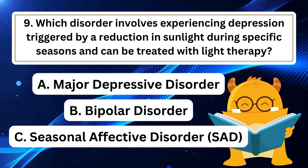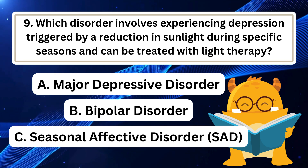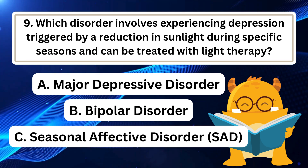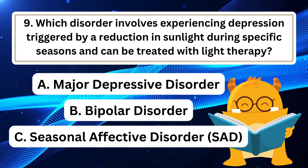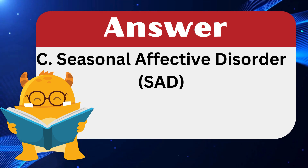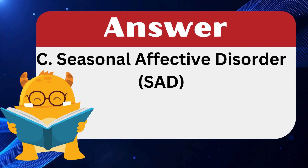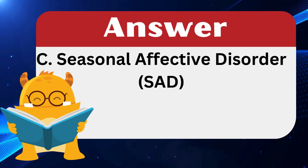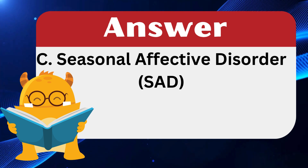Question 9: Which disorder involves experiencing depression triggered by a reduction in sunlight during specific seasons and can be treated with light therapy? The answer is C: Seasonal Affective Disorder (SAD). SAD involves depression in specific seasons, often due to reduced sunlight exposure, and light therapy is a common treatment. Major depressive disorder involves persistent depression, and bipolar disorder involves alternating manic and depressive episodes. SAD is specifically linked to seasonal changes in light exposure.